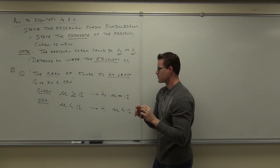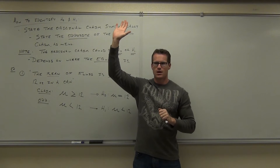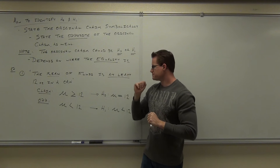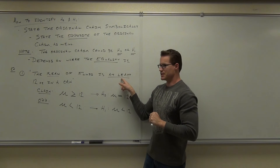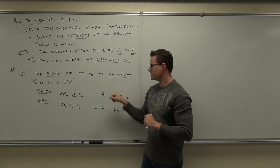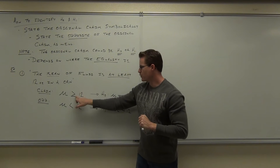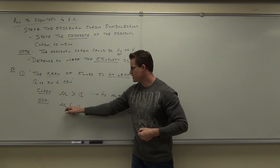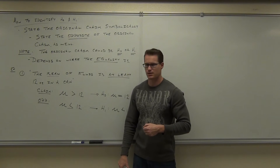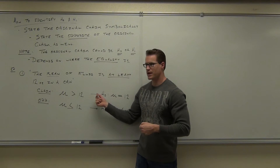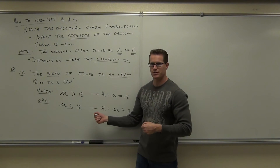The opposite in this case was our H sub one because we have no equality statement — only one of these pieces has an equality statement. So we simply rewrite it as H sub one: mu is less than 12. Notice something: if I had more than instead of at least, that wouldn't be there. That would actually be here. That would no longer be H sub zero — that would be H sub one, and that would be H sub zero.